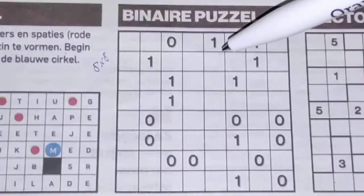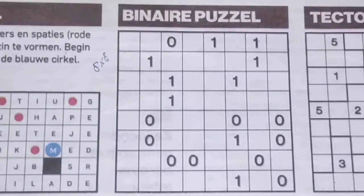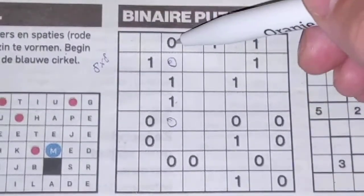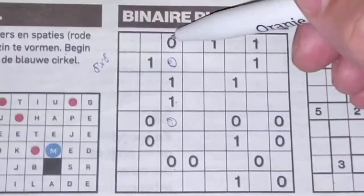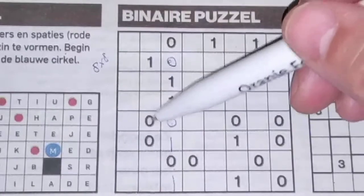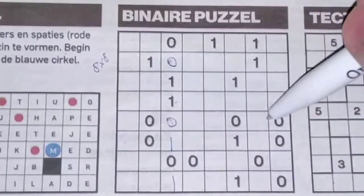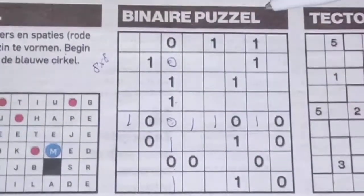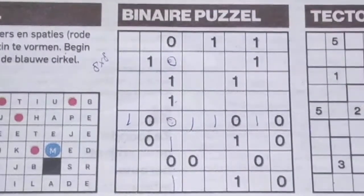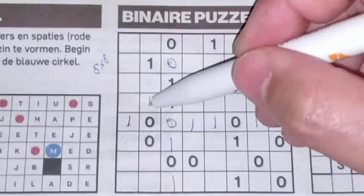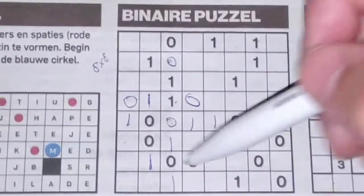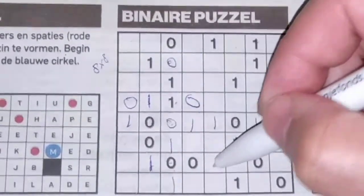Alright. Double 1 here and O, then O. So we count down 1, 2, 3, 4 — 4 O's, so the rest are 1's. Here also 1, 2, 3, 4, so the rest are 1's. Then double O here and 1, then 1. Double 1 here and O, then O. Double O here and 1, then 1.